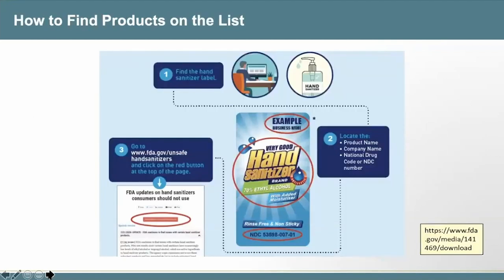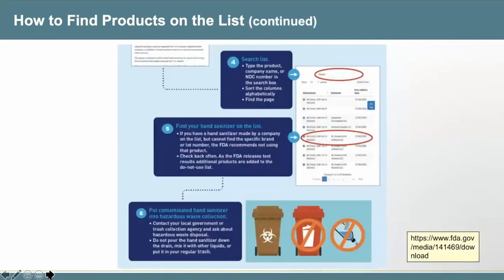Because consumers may not be familiar with what to look for on a label, we have an infographic that walks people through how to use the Do Not Use list. You can search by product name, company name, and national drug code or NDC number. This information is also available on our website in Spanish, simplified Chinese, Korean, Tagalog, and Vietnamese. Methanol-containing hand sanitizer should be disposed of in a hazardous waste collection and not put in the regular trash or poured down the drain.